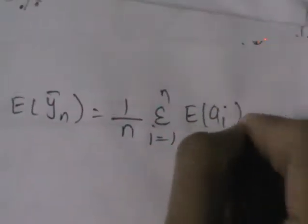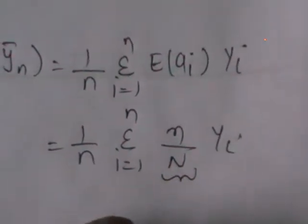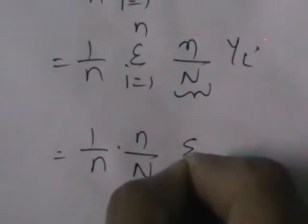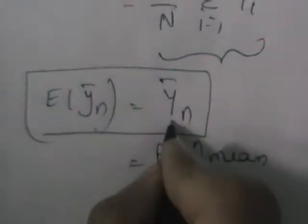This becomes 1 by n, sigma i equals 1 to N, n by N times y_i. As n by N is independent of i, we can take it out: n by N times 1 by n, sigma i equals 1 to N, y_i. The n's cancel, and you get 1 by N, sigma i equals 1 to N, y_i, which is nothing but Ȳ_N — the population mean. So we got E(ȳ_n) equals Ȳ_N, which indicates that sample mean is an unbiased estimator of population mean.